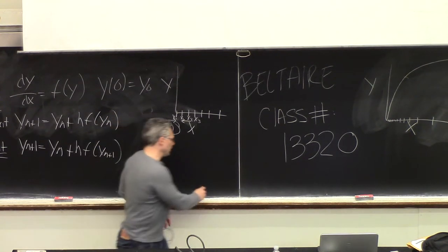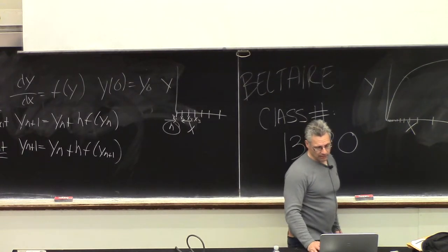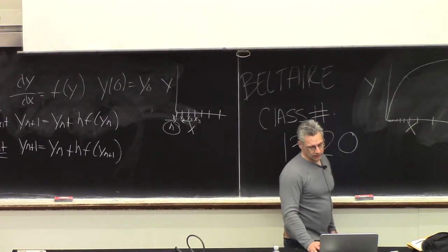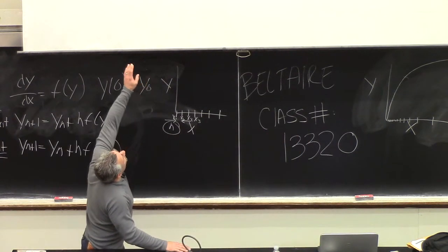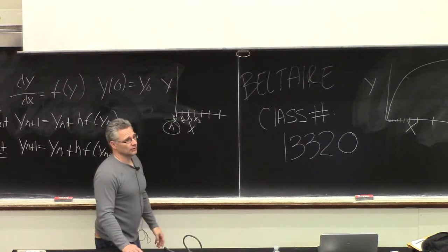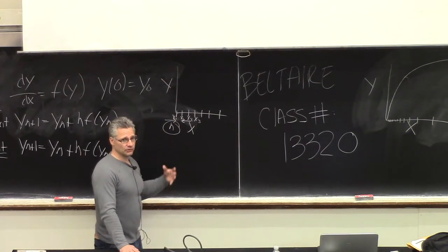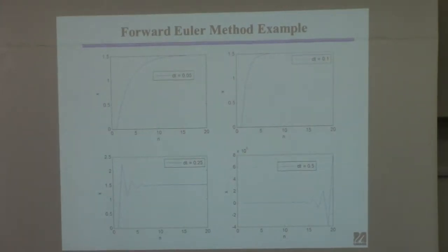When we tried to figure out what a good step size was for the Euler method, we found that if we picked it small enough it worked; if we picked it too big it oscillated; if we took it way too big the numerical solution was unstable — not the real system, but the solution. We had no idea where to pick it. So you don't really have to worry about this with variable step size codes.